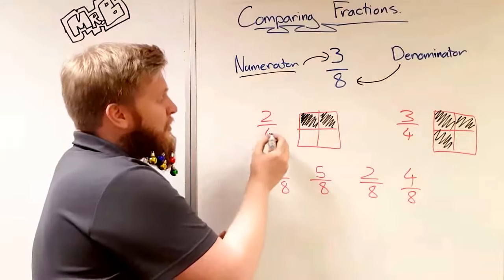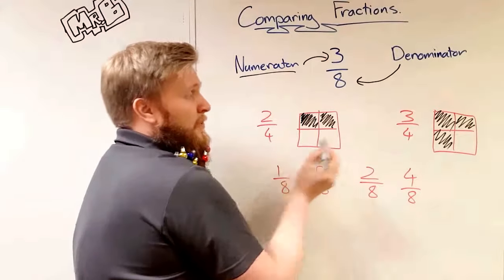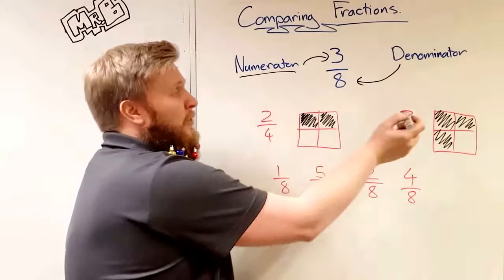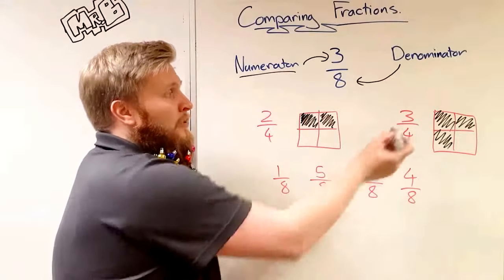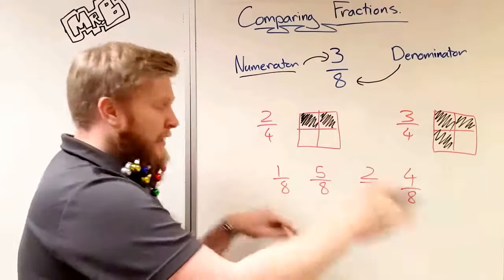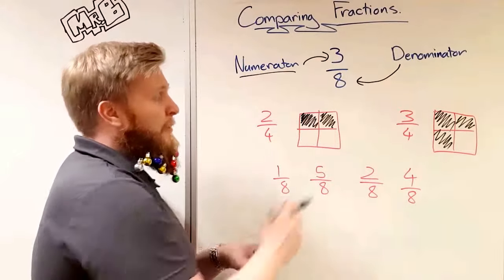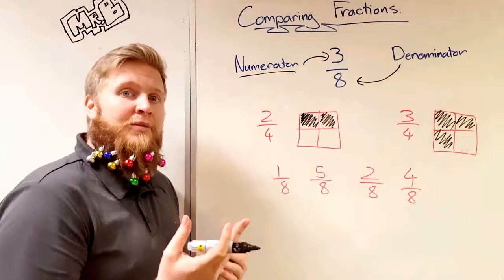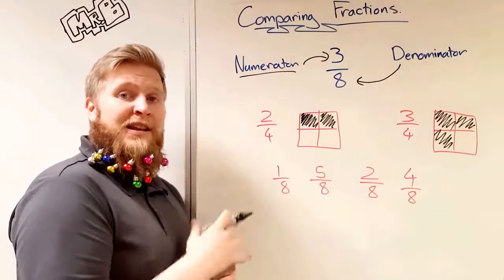The easiest way to do it, if our denominators, which are the numbers on the bottom, are the same, they have to be the same, we just have to look at the top number. So three is bigger than two, so we know three-quarters is the biggest one. Let's look down here with eighths, because we can't always draw the shapes. It will take too long and they have to be measured to make sure they're all equal sizes, and it might be hard to tell on some of them.